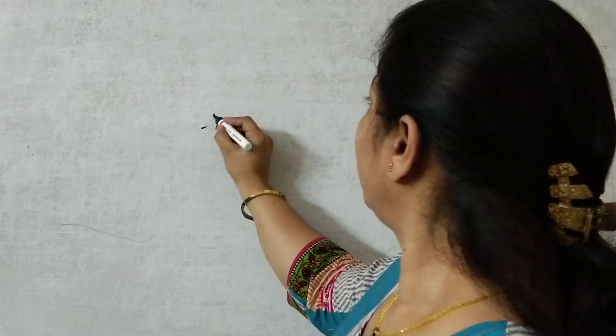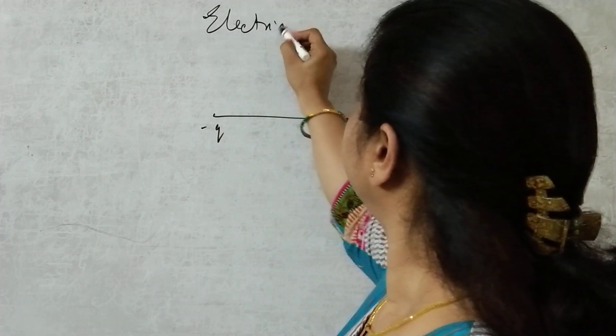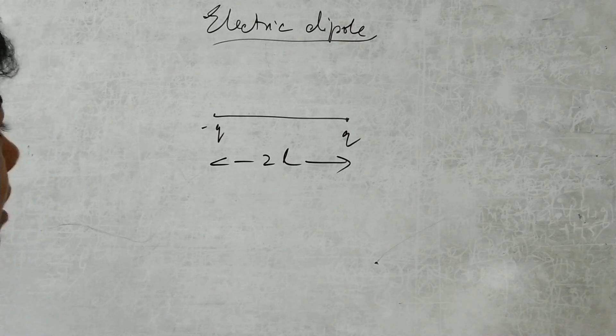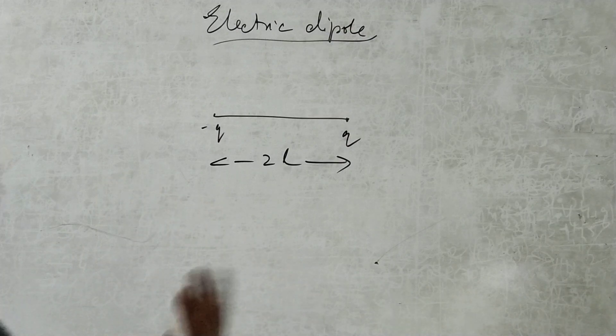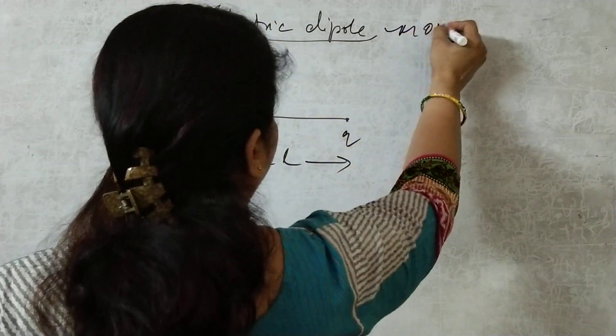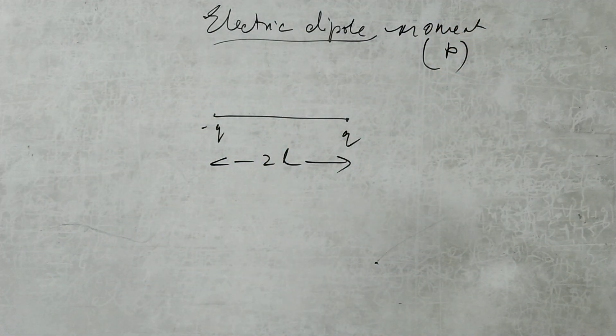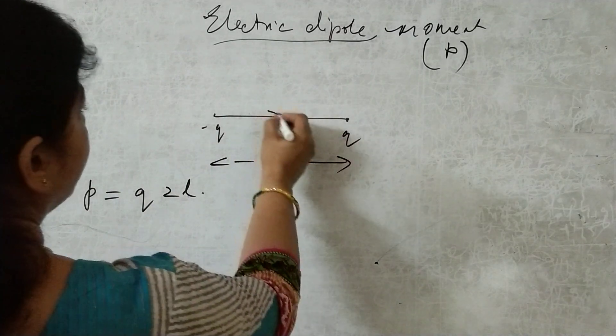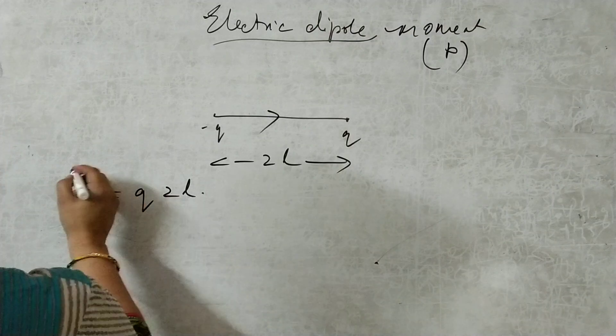For an electric dipole with charges minus q and plus q, let the distance between them be 2l. The electric dipole moment is represented by small p — it is a vector quantity. The formula is p equals q into 2l, which is the product of the magnitude of either charge and the distance between them. The direction of the dipole moment is from negative to positive.